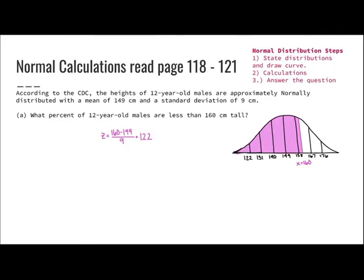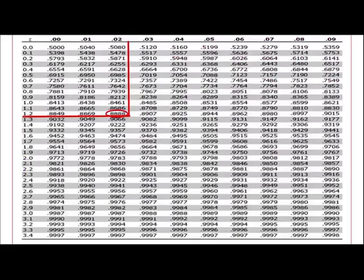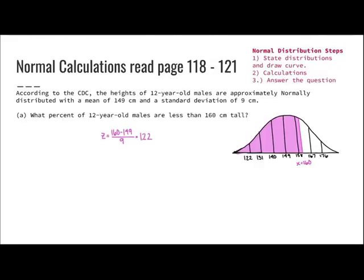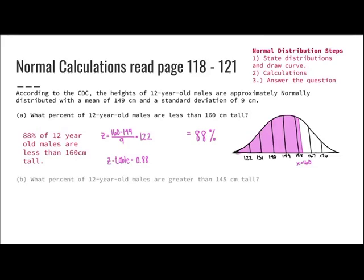To find the percent, I use the Z-table. Looking up 1.2 and 2, I get 0.8888. Because it's shading to the left, that's 88%. So 88% of 12-year-old males are less than 160 centimeters tall. Check if it makes sense — does it look like about 88% of the graph is shaded? Yes.